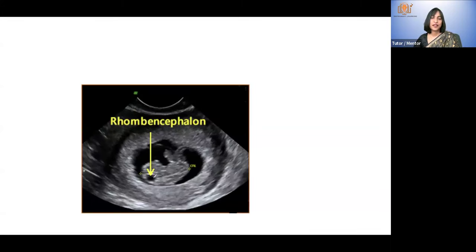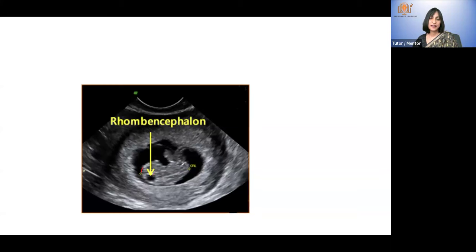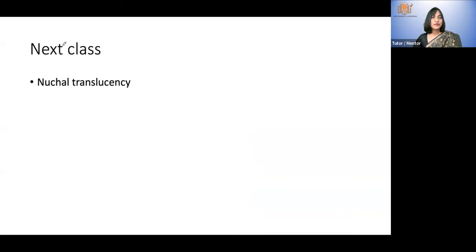Those are the limb buds. This is the rhombencephalon seen also in the earlier image. This is a sagittal view. That is the CRL — this is the head, this is the rump — and that is the developing umbilical cord. These are lower limb buds; upper limb buds must be somewhere nearby. You can see the choriodecidual reaction again, and it is thickening here, which is probably the site of the developing placenta. In the next class we will see nuchal translucency.